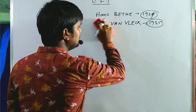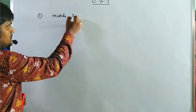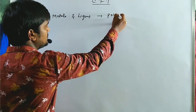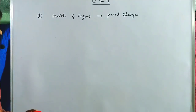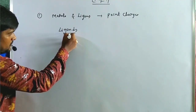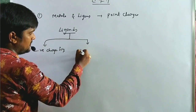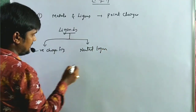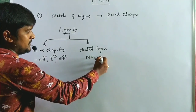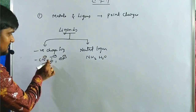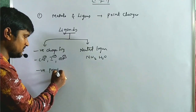According to crystal field theory, metals and ligands are considered as point charges. Ligands are of two types: one is negatively charged ligands, and another one is neutral ligands. Examples of negative charge ligands are Cl⁻, I⁻, OH⁻. These types of ligands are considered as negative point charges.